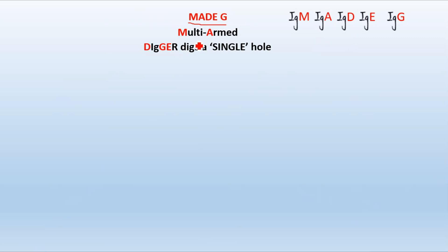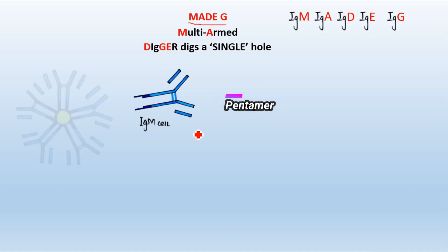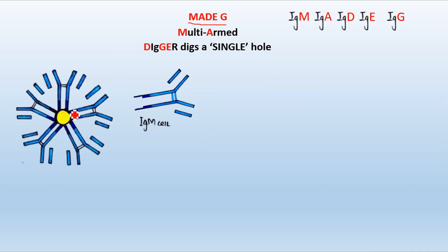Let's move towards the first Ig or antibody, which is IgM. This IgM has two kinds of existence — it can exist in two forms. Either in the monomeric form, in which case it would be called the IgM unit or IgM cell, or it can exist in the form of a pentamer if five such units combine with each other. They have this combining or joining point — the yellow portion — known as the J protein or J chain protein, because J means joining.